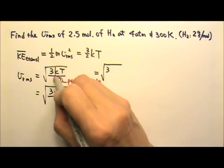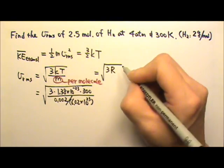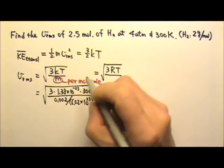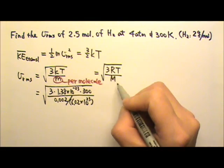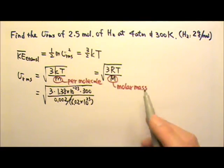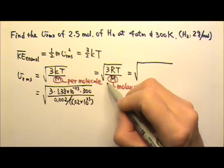So this will be 3 instead of k, we can use R. And then instead of the mass per molecule, this here would be the molar mass. So if I use the mole, then the R, I have to use the standard unit one, which is 8.31.